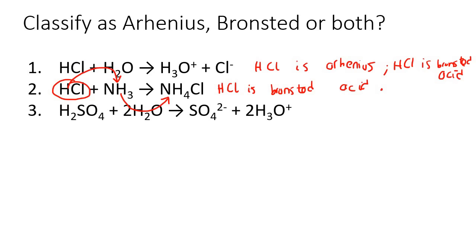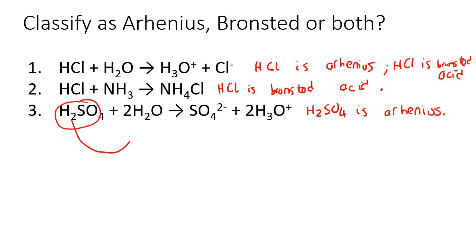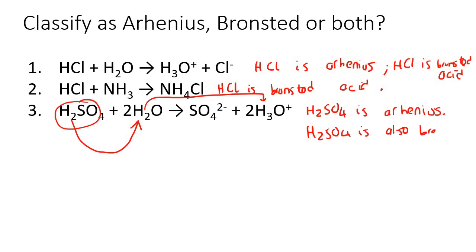For number three, H2SO4 is being reacted with water and H3O+ is produced, so we can say H2SO4 is Arrhenius. But this H2SO4 is also giving its hydrogens away to the water molecule — and that is why H2O turns into H3O+. So we can say that H2SO4 is also a Bronsted acid.